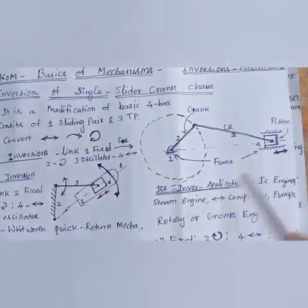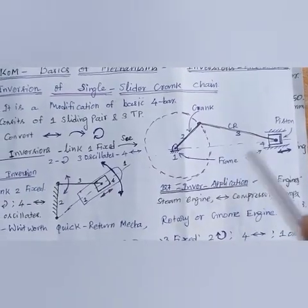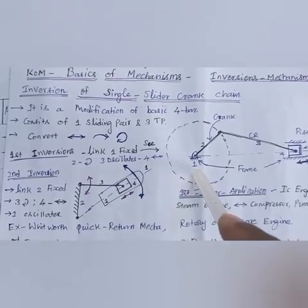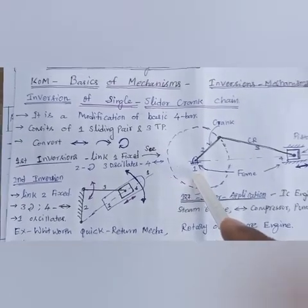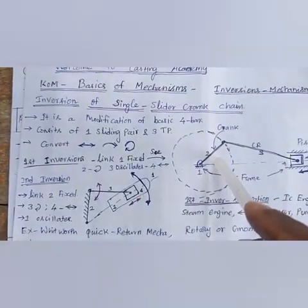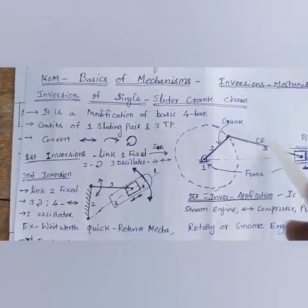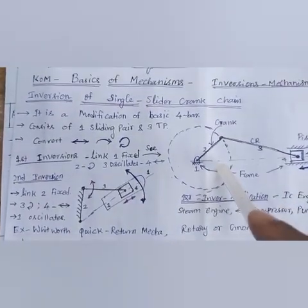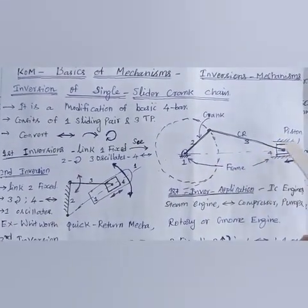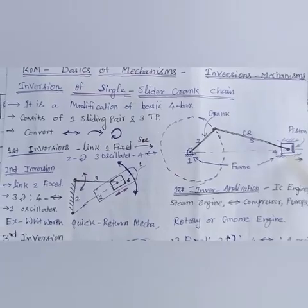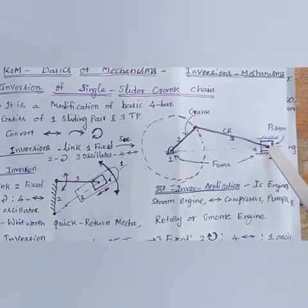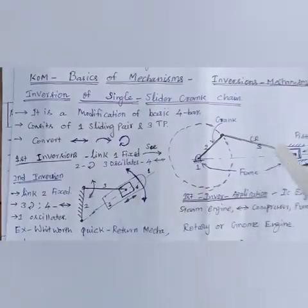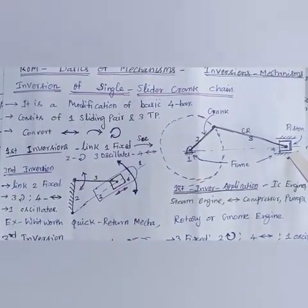First inversion: link one (the frame) is fixed, link two rotates, link three oscillates, and link four (the slider) reciprocates. This is the first case of inversion of the slider crank mechanism. Practical applications include IC engines, steam engines, compressors, and pumps.